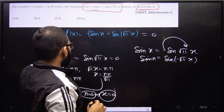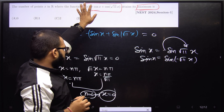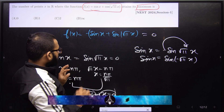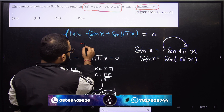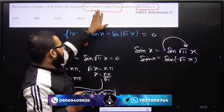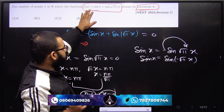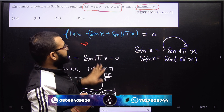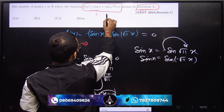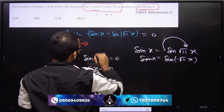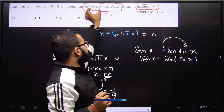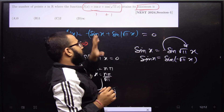The global maximum value of this function: if we put x = 0, we can write the global maximum value of f(x) is equal to 2, because at x = 0 both cos(x) and cos(√11·x) are equal to 1, so their sum is 2.